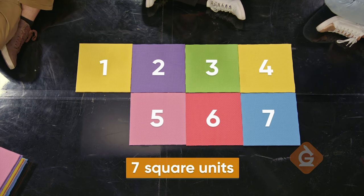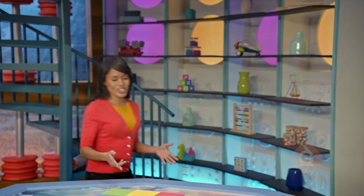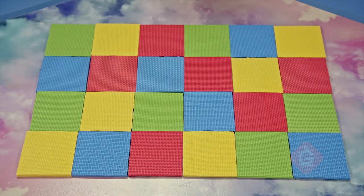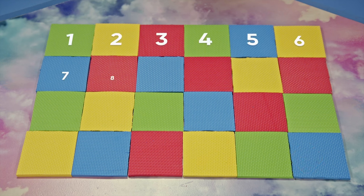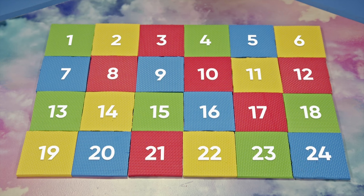One more to really challenge you. Look at this shape. Can you tell me what its area is? This shape is made of 24 squares. As long as each of the squares in the figure are the same size, they each represent one square unit. All you have to do is count the squares inside the shape.